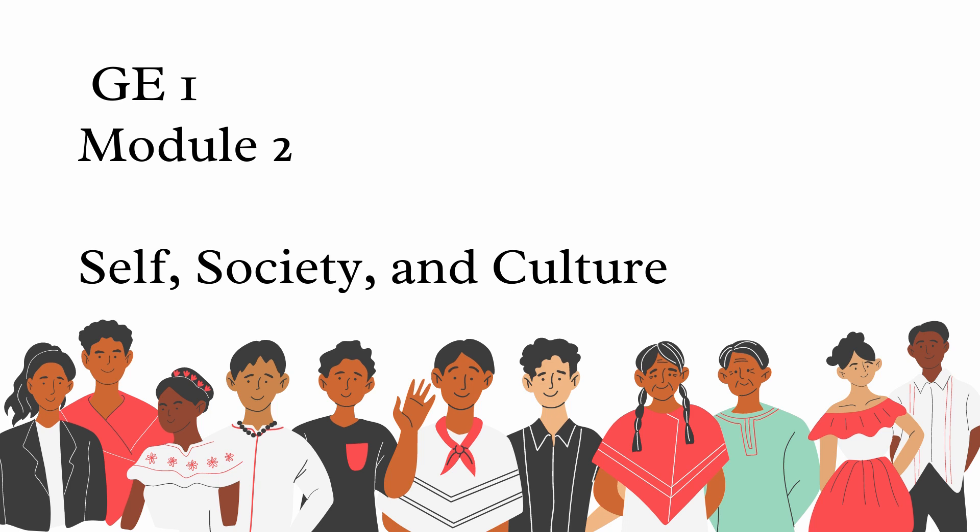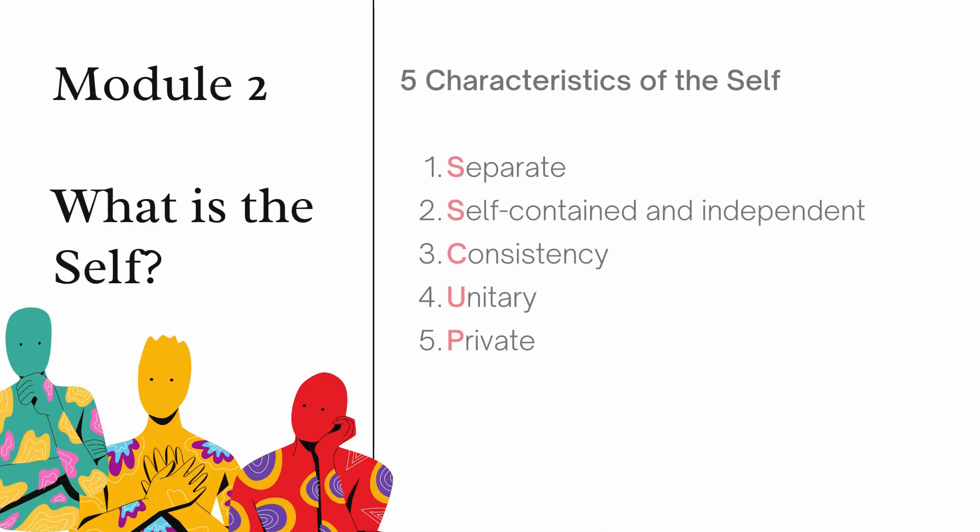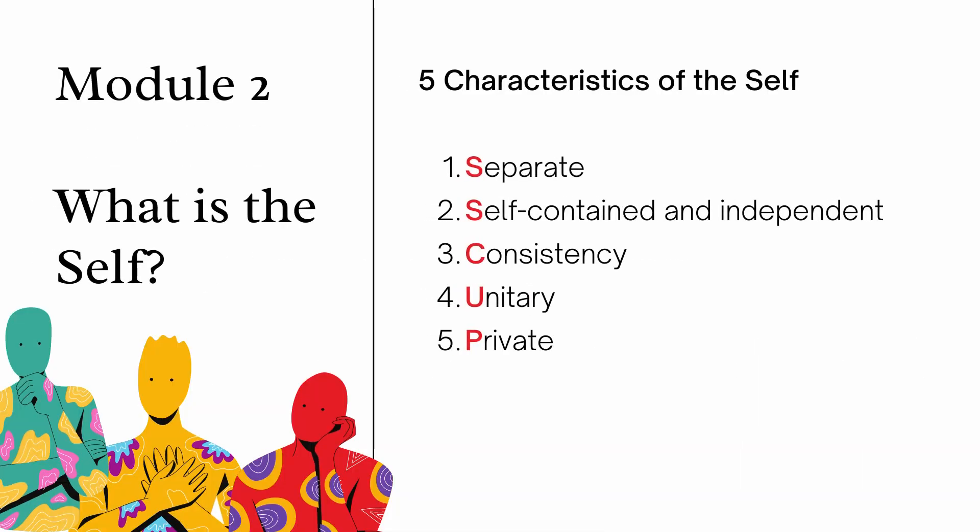The first thing we need to do is define what the self is. According to Stevens, the self has five characteristics: number one, separate; two, self-contained and independent; three, consistent; four, unitary; and five, private.